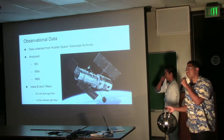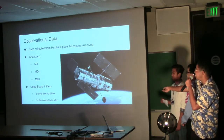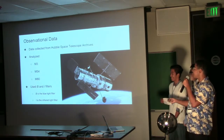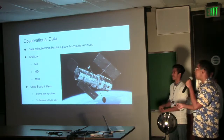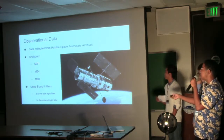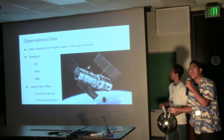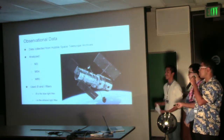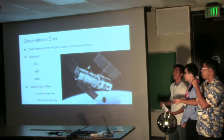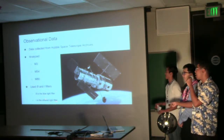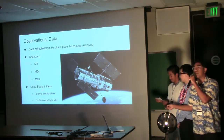We used observational data from the Hubble archive to analyze M3, M54, and M80. We also utilized the B filter, which is for blue light, and the I filter for infrared light.